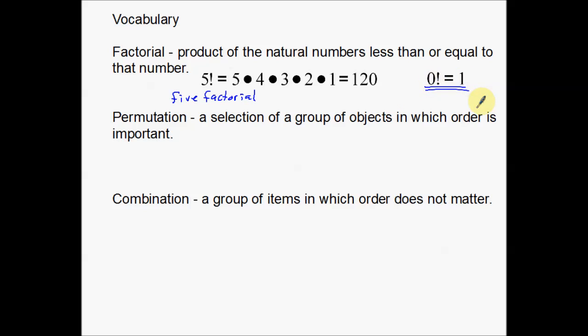One special case: 0 factorial is just going to equal 1. That's a special note — factorial kind of breaks down when we get to 0, so we just say special case: 0 factorial equals 1.